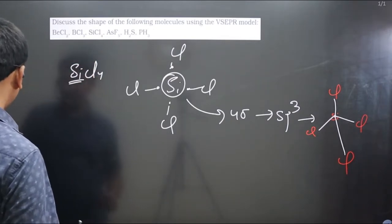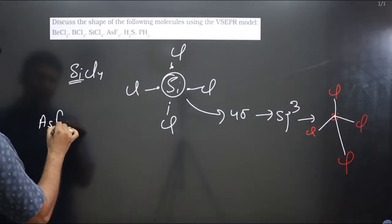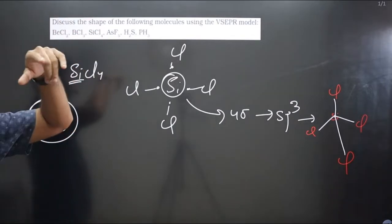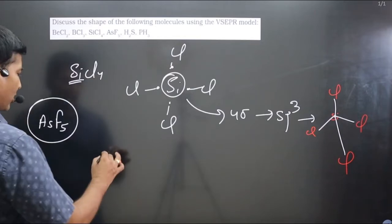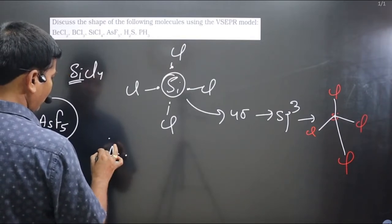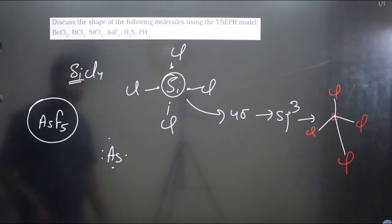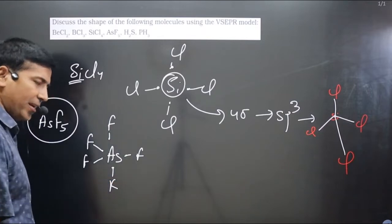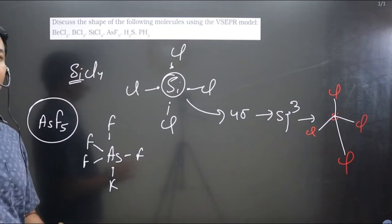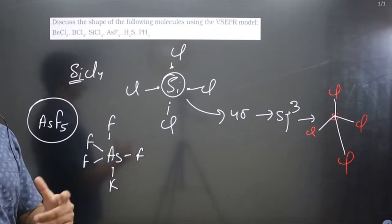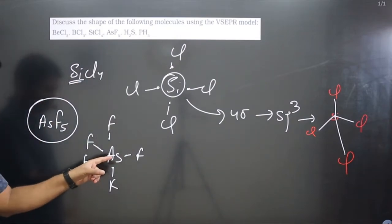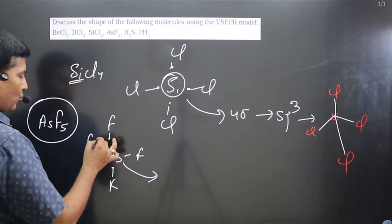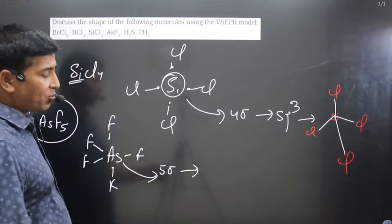Next molecule is AsF₅ — arsenic pentafluoride. Following the same steps, arsenic is present in the 15th group — nitrogen, phosphorus, arsenic — so arsenic has five valence electrons. Fluorine is a halogen forming a single bond. Since arsenic is using all five valence electrons for bond formation, it does not carry any lone pairs.